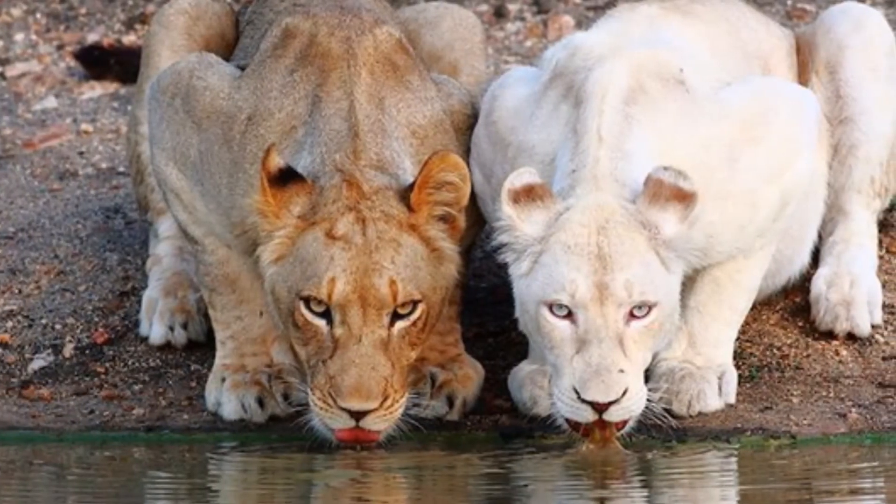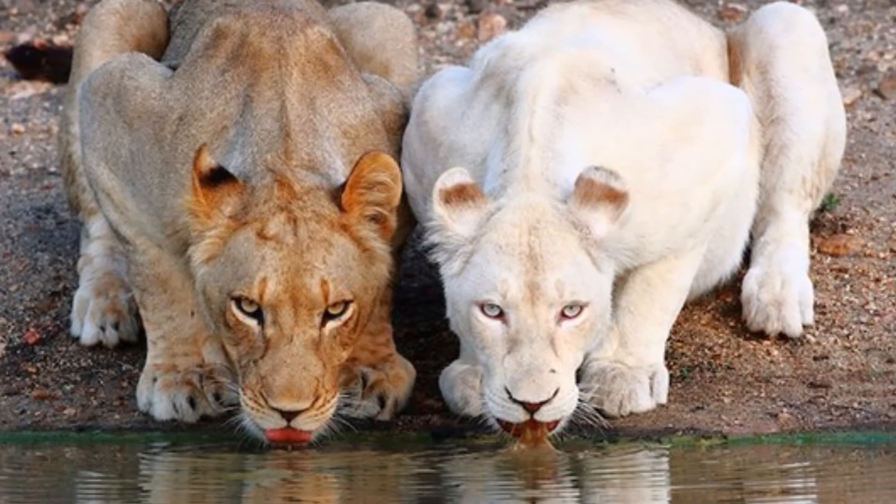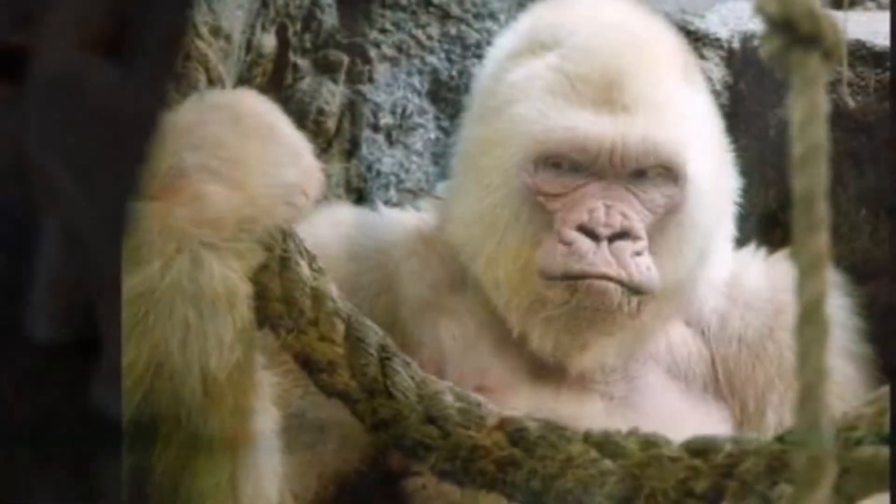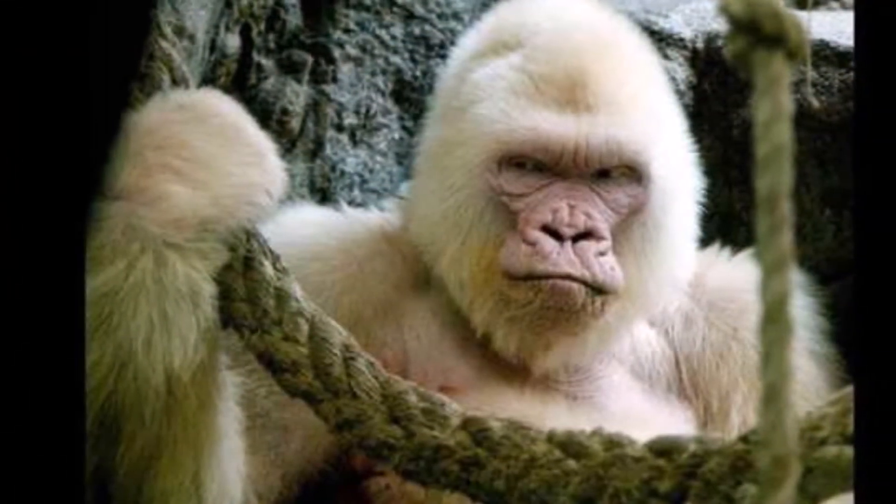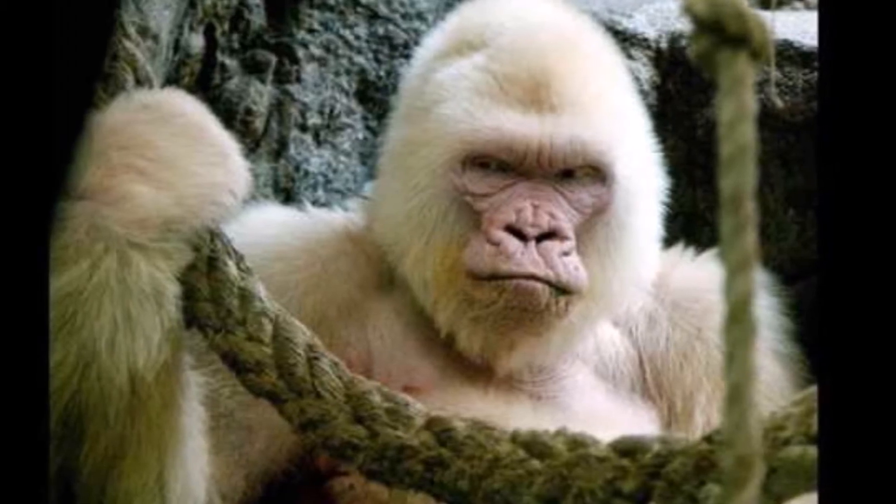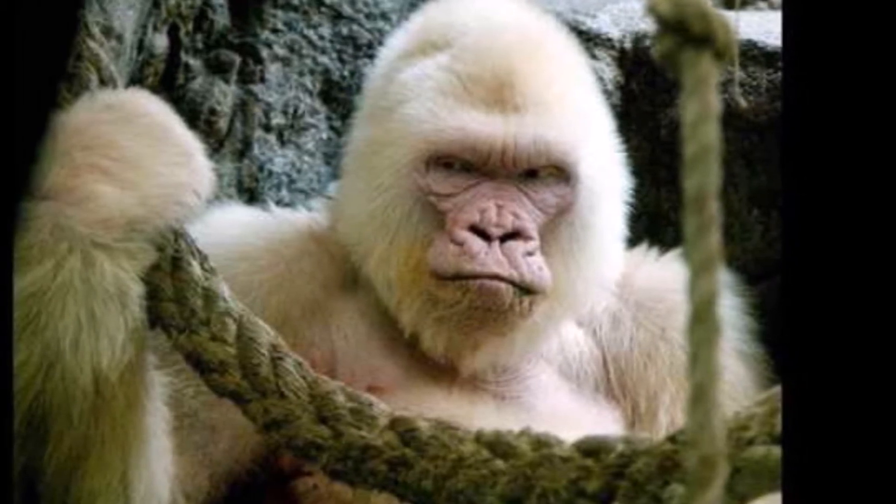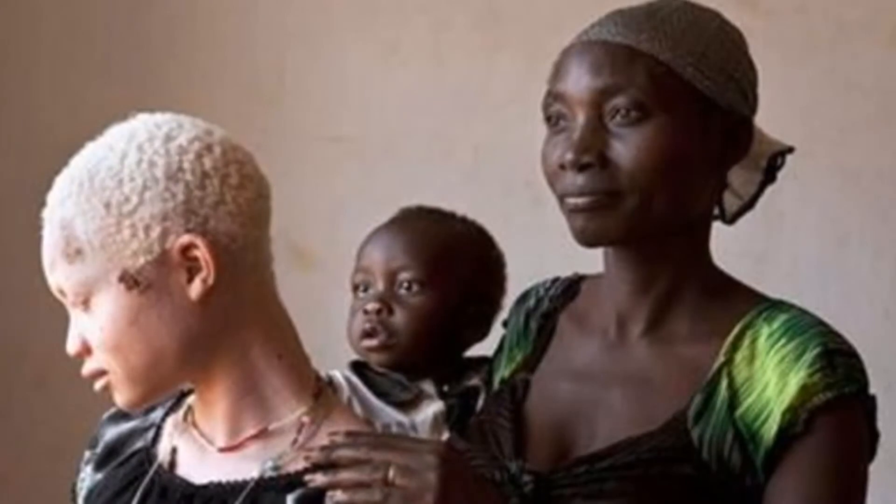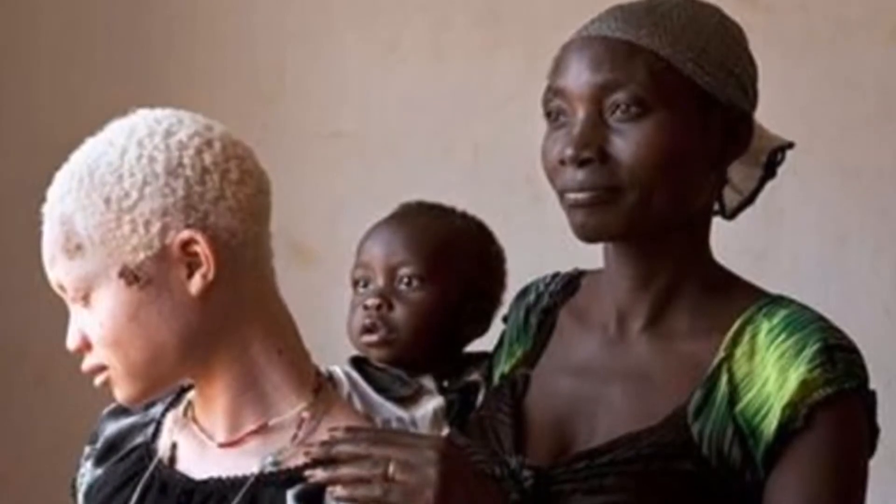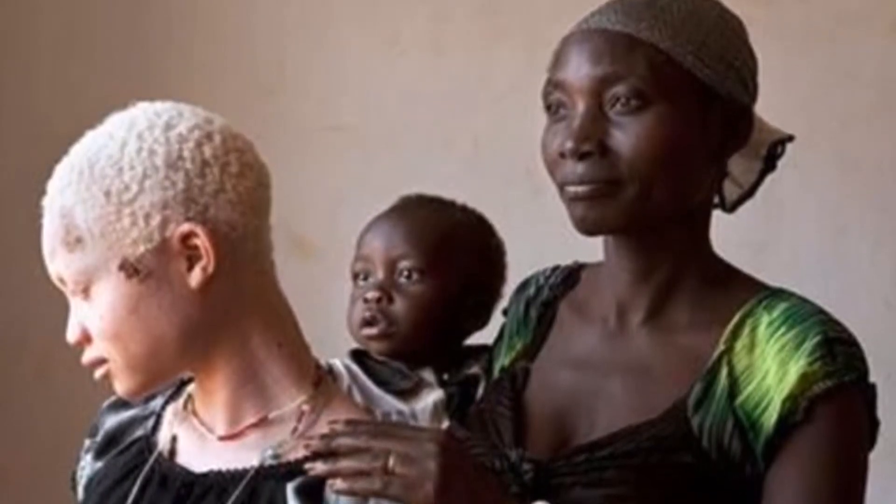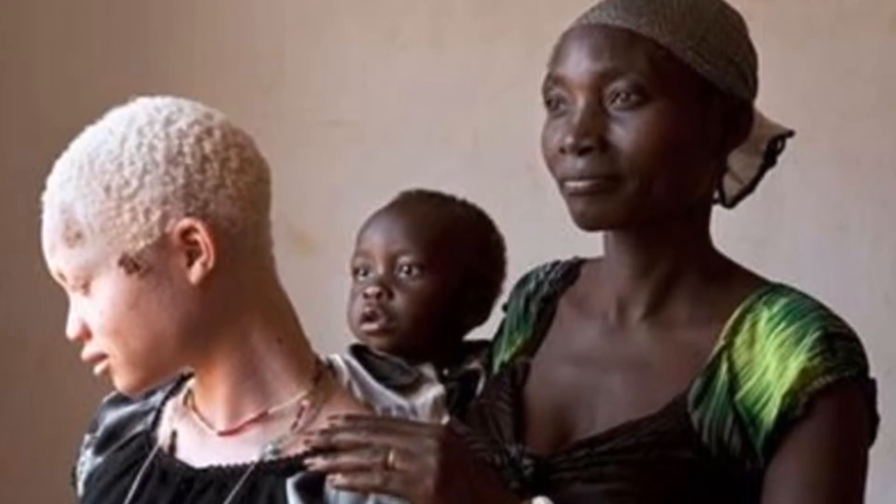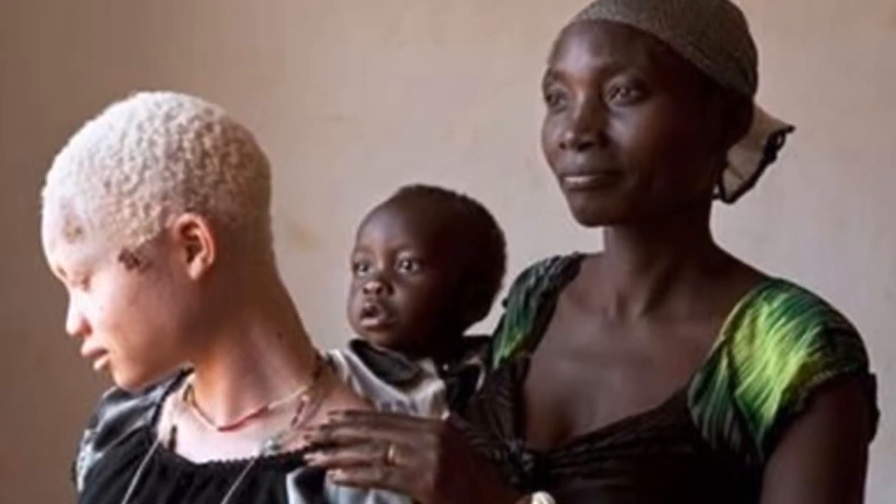Without the catalytic activity of tyrosinase, melanin cannot be synthesized properly, which leads to a condition known as albinism or a lack of pigmentation. Albinism is known to occur in many species including humans, penguins, monkeys, squirrels, among other species. Those that have albinism appear to lack color in their hair, skin, and eyes and may even have visual impairments.